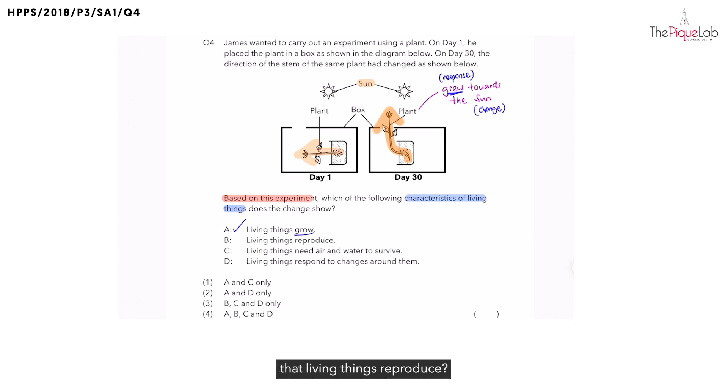Does this experiment show us that living things reproduce? To answer this, we must first understand what reproduce means. When the plant reproduces, this means there is going to be more of the organism. So from the experiment, did we see an increase in the number of plants? No. Which means, does this experiment show us living things reproduce? Definitely not. So let's cross out B.